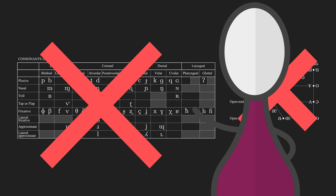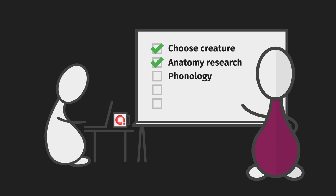Figure out what your species' anatomy is like and stick to it, so you can keep your phonology believable and consistent with your vision. Speaking of phonology, I assume that would be the next logical step after species selection and anatomy homework.